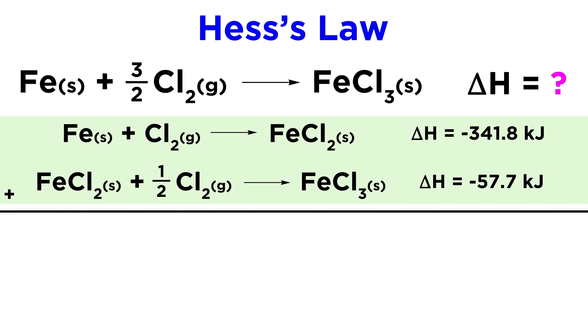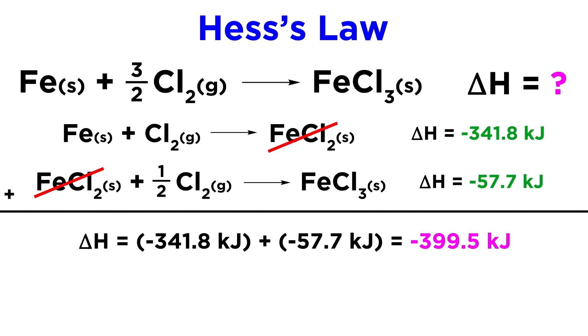We can make use of these equations by adding them together, because if we combine them, FeCl2 will cancel out, one mole plus a half a mole of Cl2 will give us three halves moles of Cl2, and we end up with the reaction in question. Because we added these reactions together, we simply add up their delta H's, and we get negative 399.5 kilojoules, which must therefore be the enthalpy of formation for FeCl3.